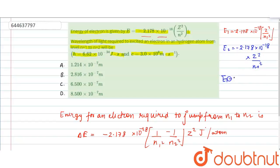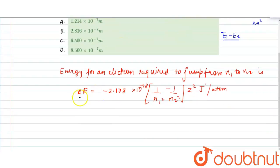Similarly, E2 equals minus 2.178 times 10 to the minus 18 times z squared by n2 squared. And the difference, E1 minus E2, would be the energy required to jump electron from n1 to n2, denoted by delta E.